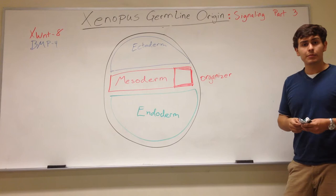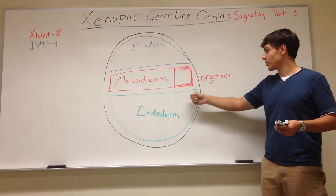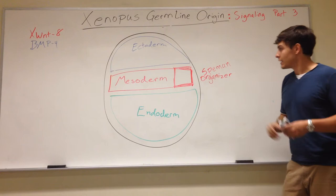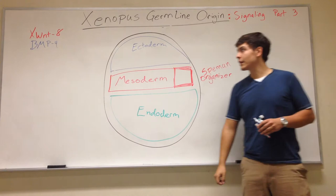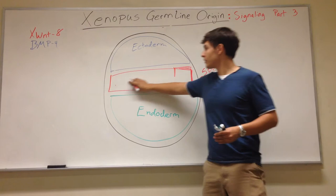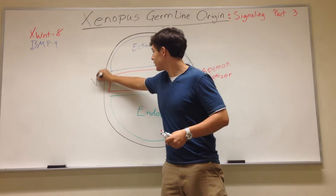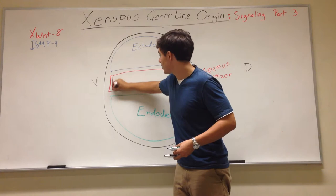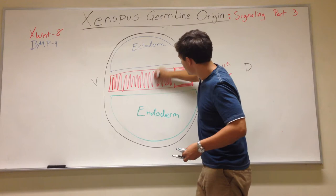In addition, because of where the Nieuwkoop Center gives rise to the Spemann organizer — and for consistency I'll just call it the Spemann organizer — we have the Spemann organizer located here in the mesoderm. What we also have now are two other important proteins: X-Wnt8 and BMP4. The expression for X-Wnt8 is all throughout the mesoderm. This is ventral and this is dorsal, and X-Wnt8 is located in the mesoderm and will signal for ventral regions.